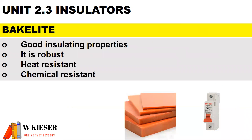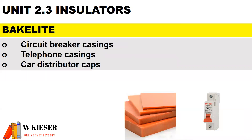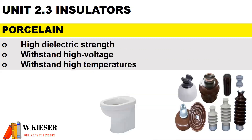Bakelite is a very hard plastic. It has good insulating properties — it is robust, heat resistant, and chemical resistant. It is mainly used for circuit breaker casings, telephone casings, and car distributor caps.